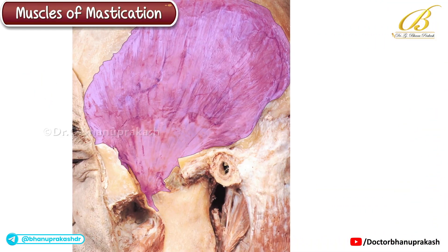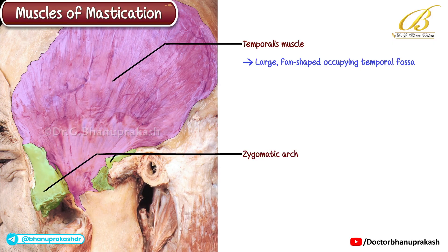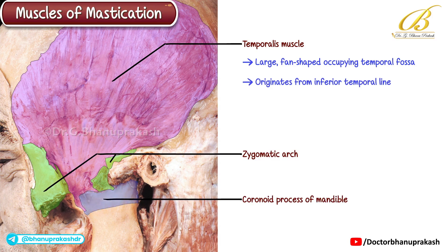This image shows the temporalis muscle. It is a large fan-shaped muscle occupying the temporal fossa and passing beneath the zygomatic arch. It originates from the inferior temporal line and inserts onto the coronoid process of the mandible.